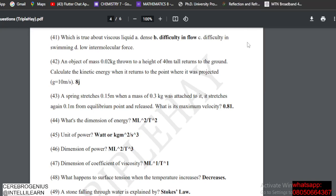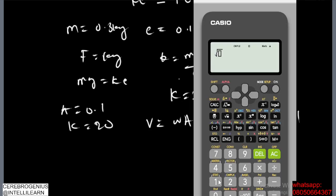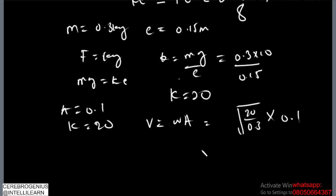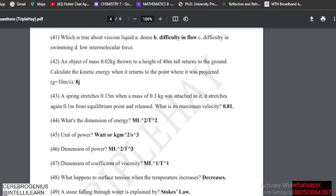I always forget the formula for omega — it should be the square root of k over m. You've already gotten the value of k to be 20, so omega equals the square root of 20 over 0.3 multiplied by 0.1. That gives us 0.82.